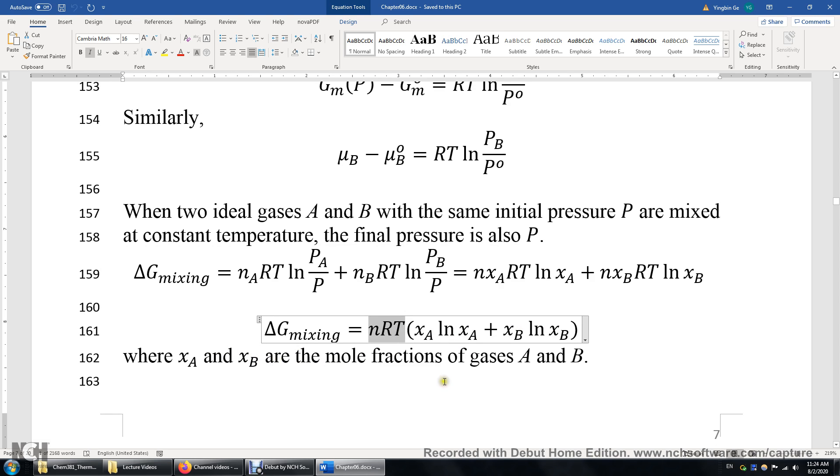Again, XA and XB are the mole fractions of A and B in the mixture. So for air, you can say, well, X of nitrogen is 0.8, X of oxygen is 0.2, approximately.